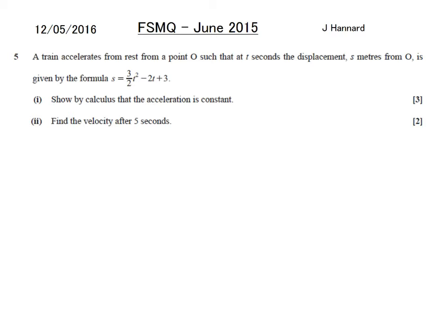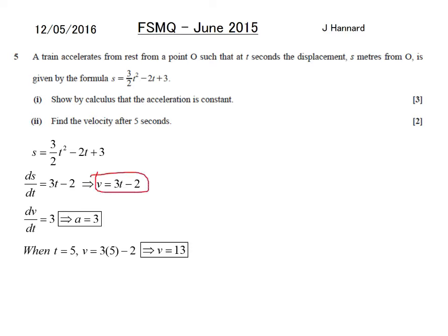Question 5, then. A train accelerates from rest from a point O, such that after t seconds, the displacement in s meters from O is given by the formula s equals 3 halves of t squared minus 2t plus 3. Show by calculus that the acceleration is constant. So the relationship between displacement and acceleration means you have to differentiate twice. So I diff once, ds dt, which is the same as velocity. So I'll get that. And I differentiate my velocity, dv dt, which is also a. And a is a 3. 3 is a constant. It'll never change, no matter what t is. It's not variable. Second part, find the velocity after 5 seconds. So when t equals 5, v equals 3 times 5 minus 2, because of my velocity equation up here. Put them in. V equals 13. Job done.